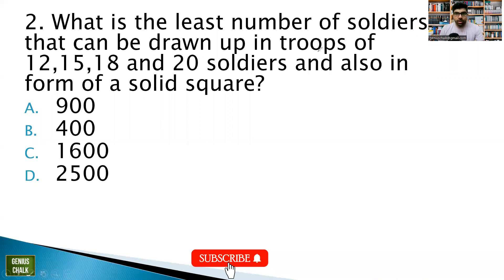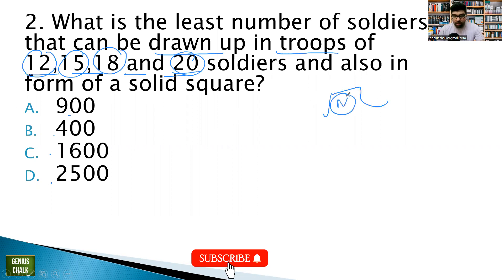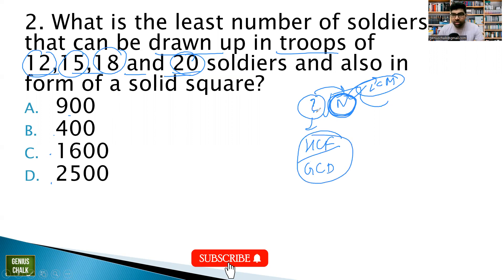Next question: what is the least number of soldiers that can be drawn up in troops of 12, 15, 18, and 20, and also in the form of a solid square? Whenever you find this type of question where the numbers used are small and the answers are bigger, we always use the concept of LCM, because we are looking for a multiple. Remember: whenever you have to find a divisor, find HCF; whenever you're looking for a multiple, find LCM.